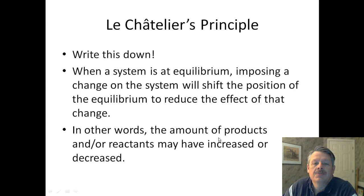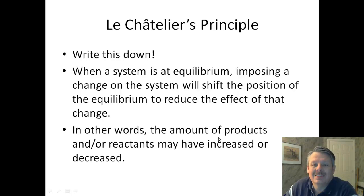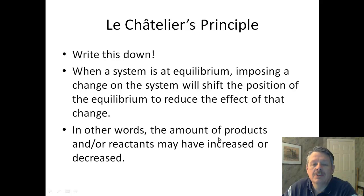Write this down, please. When a system is at equilibrium, imposing a change on the system will shift the position of the equilibrium to reduce the effect of the change. In other words, you always go away from additional stuff. The amounts of products or reactants may have increased or decreased. Write that down — I know it's hard to understand, but it won't be for long.